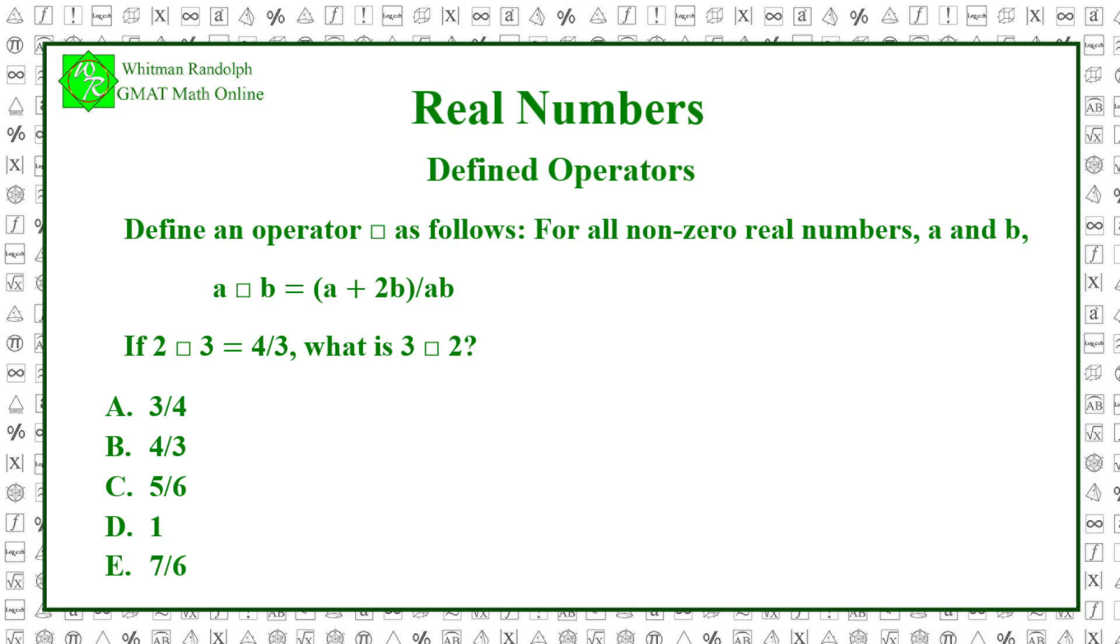Problems like these can be fun because they generalize the ideas of addition and multiplication, both of which are themselves operations. So let's plug in the numbers and see what happens with this operation. 2 box 3 equals (2 + 2 times 3) / (2 times 3), which equals (2 + 6) / 6, and that equals 8/6, which equals 4/3. Thus we can see that the first part of the problem statement is true. 2 box 3 does equal 4/3.